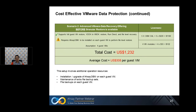Scenario two: the advanced data recovery offering before using the granular restore module. To support file-level recovery, you need to purchase an additional four OBM licenses to install OBM on each guest. In total you need five OBM licenses at $220 each and four VMware modules at $23 each. The total cost of this solution is $1,022, working out to $380 per guest VM. This setup also involves additional operational resources such as installation and upgrade of OBM on each guest, maintenance of extra file backup sets, and annual file backups.